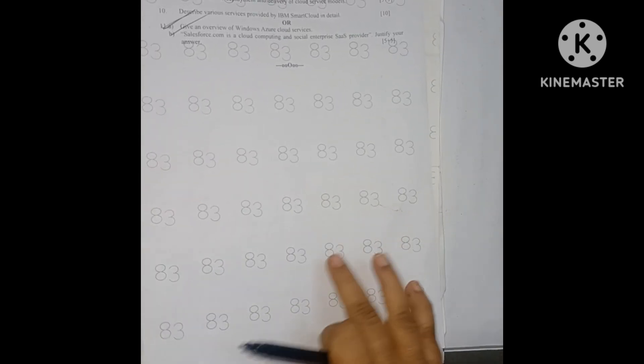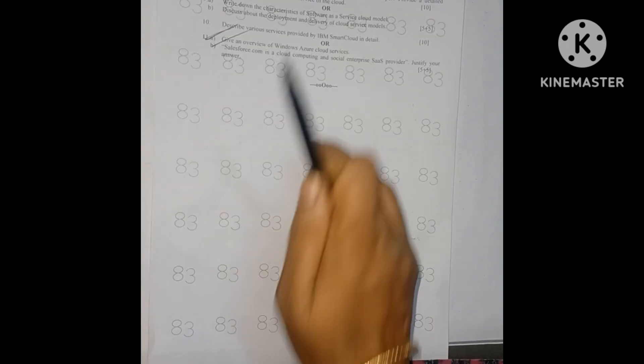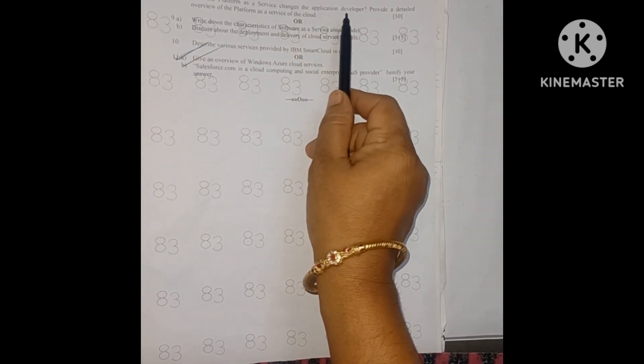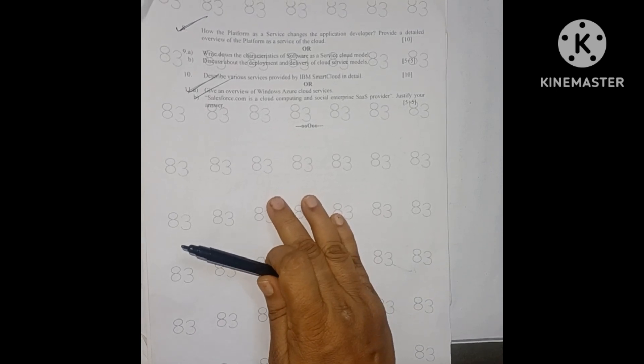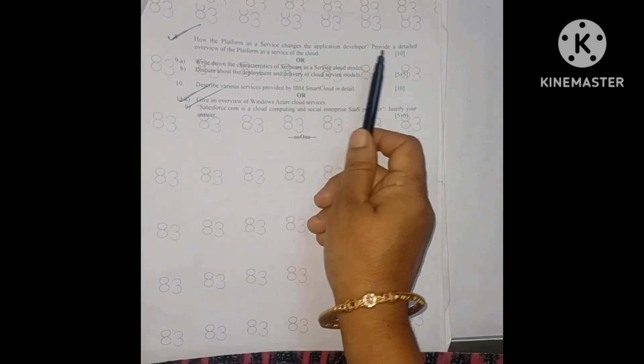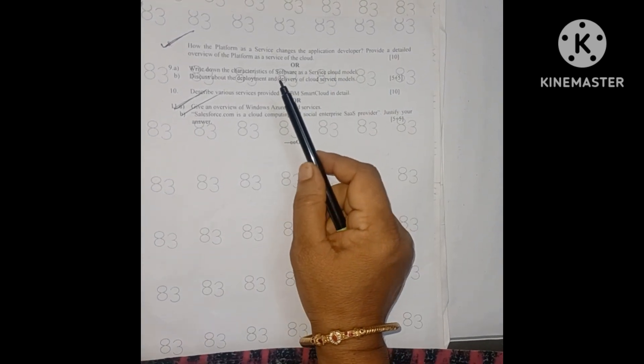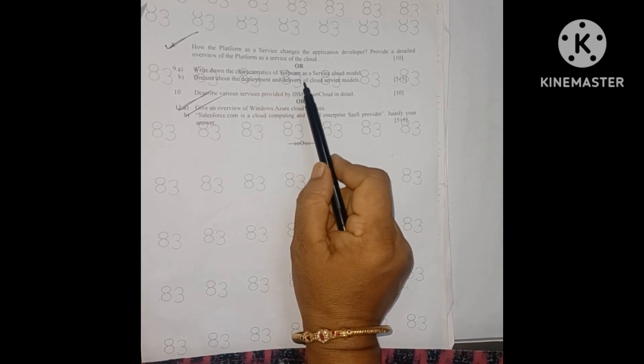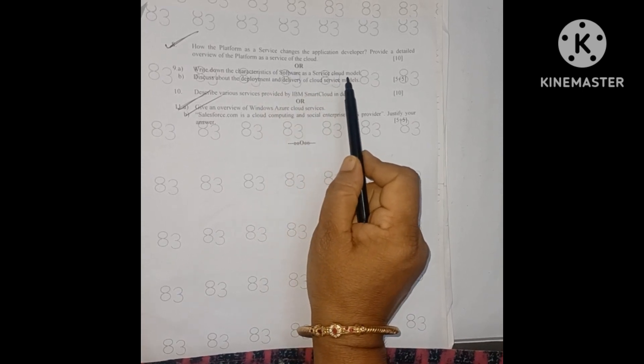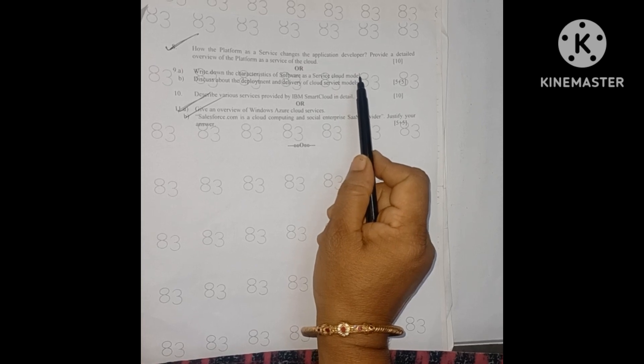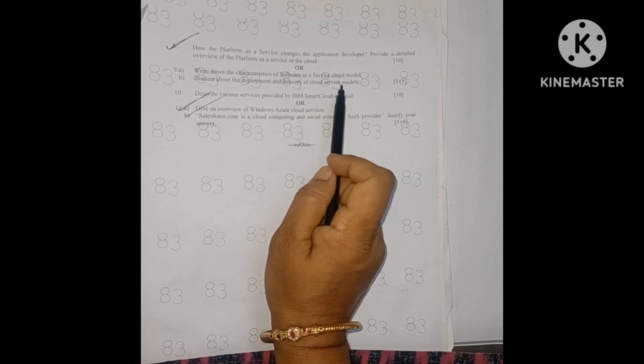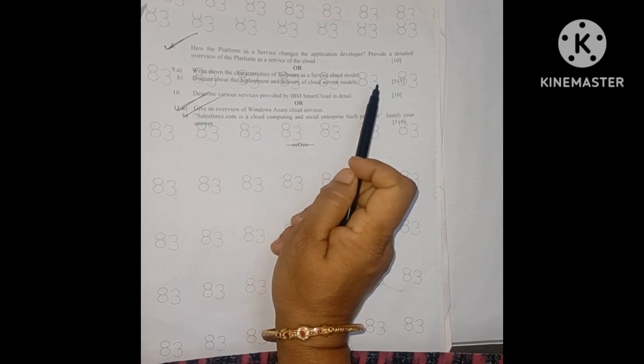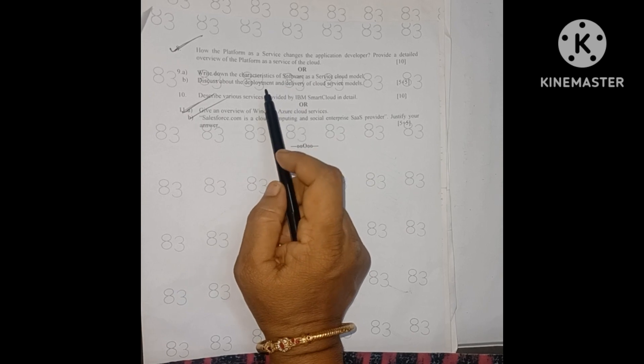Unit 4 questions: How does the platform as a service change the application developer? Provide a detailed overview of the platform as a service of the cloud, about PaaS, a direct 10 marks question or internal choice. Write down the characteristics of software as a service cloud model for SaaS, 5 marks. Discuss about the development delivery of cloud service models, 5 marks. These 2 questions are from unit 4.